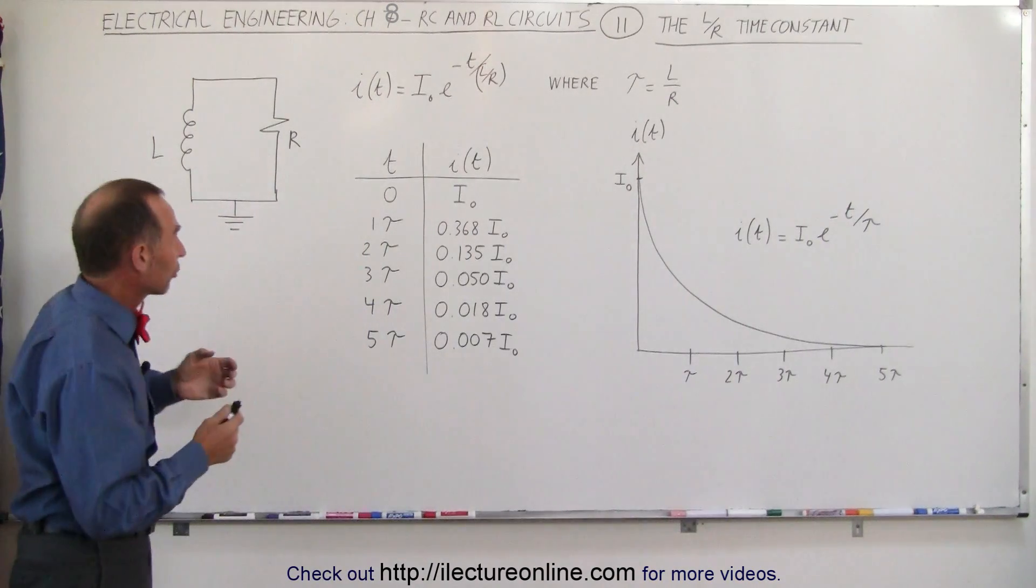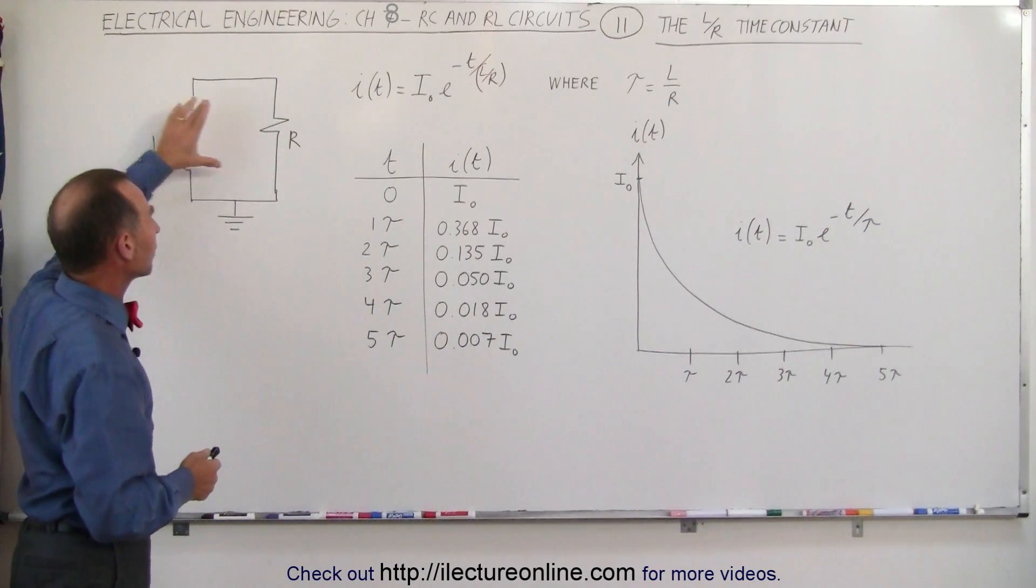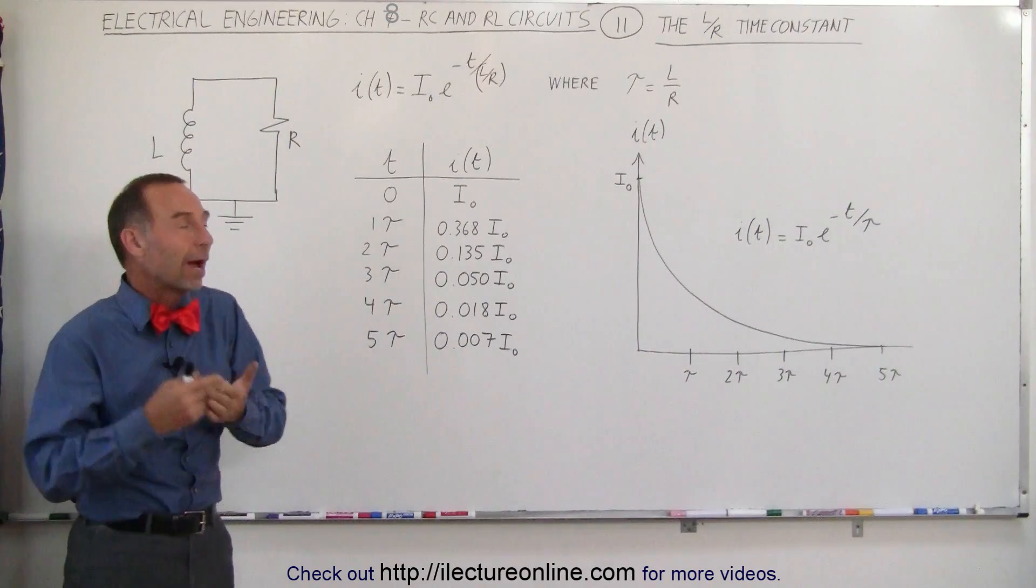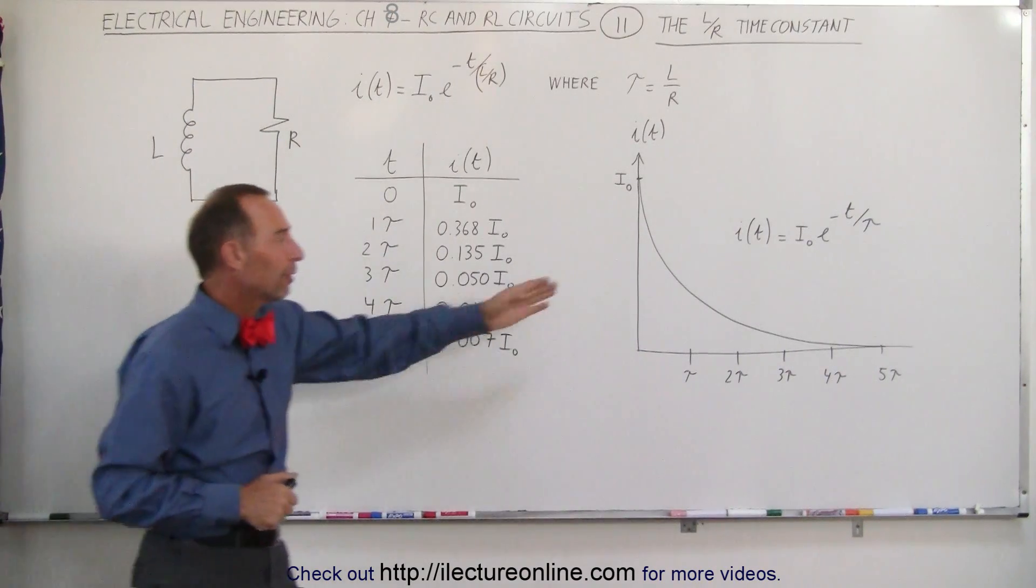We can see that in an RL circuit, a circuit that contains an inductor and a resistor, the current through the circuit drops exponentially in the very same fashion.